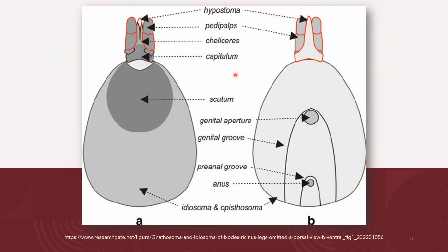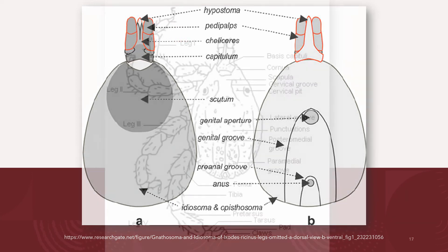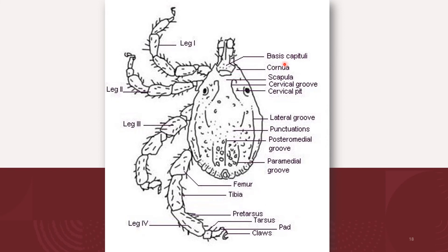This is a diagram of a representative tick, Ixodes ricinus, with legs omitted, showing the gnathosoma and idiosoma. The gnathosoma contains the hypostome, pedipalps, and chelicerae. We also have a diagram of a male ixodid tick in dorsal view, showing the gnathosoma, the basis capituli, and the four pairs of legs. For its legs, there is the presence of the femur, tibia, pretarsus, tarsus, claws, and pad.